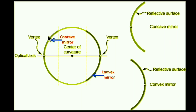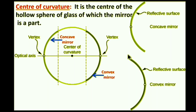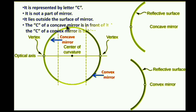Now we will discuss some terminology. The first term is center of curvature. If you take this hollow glass sphere, the center point of that sphere is called the center of curvature. The mirror is a part of this hollow sphere, and the center of that sphere is generally called the center of curvature. It is represented by the letter C.